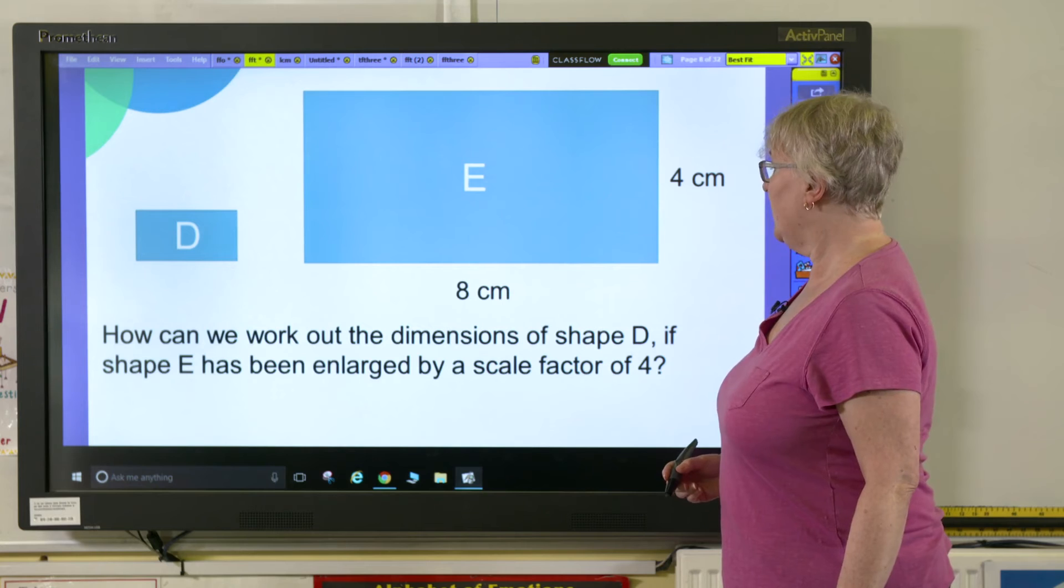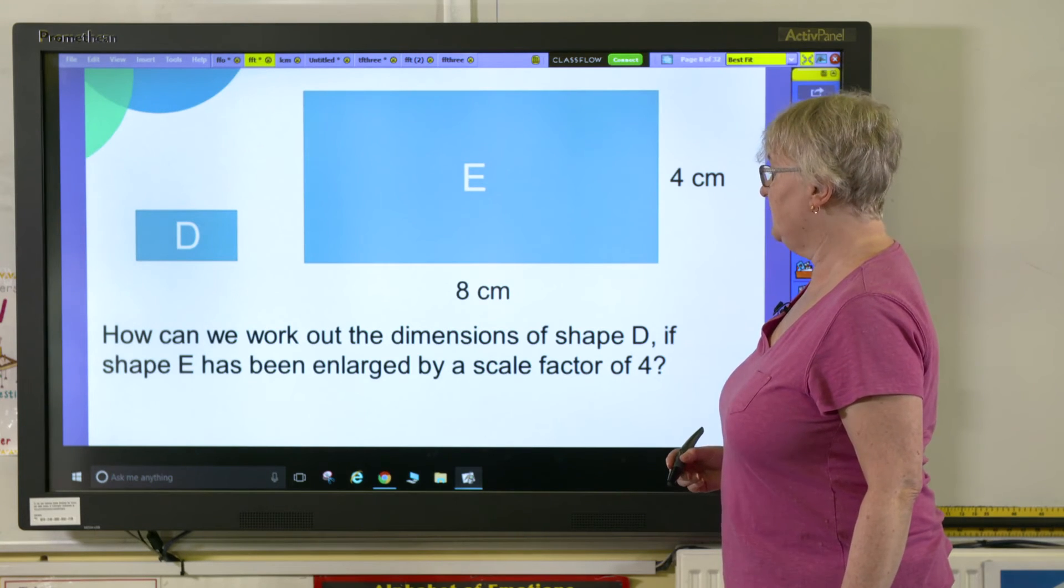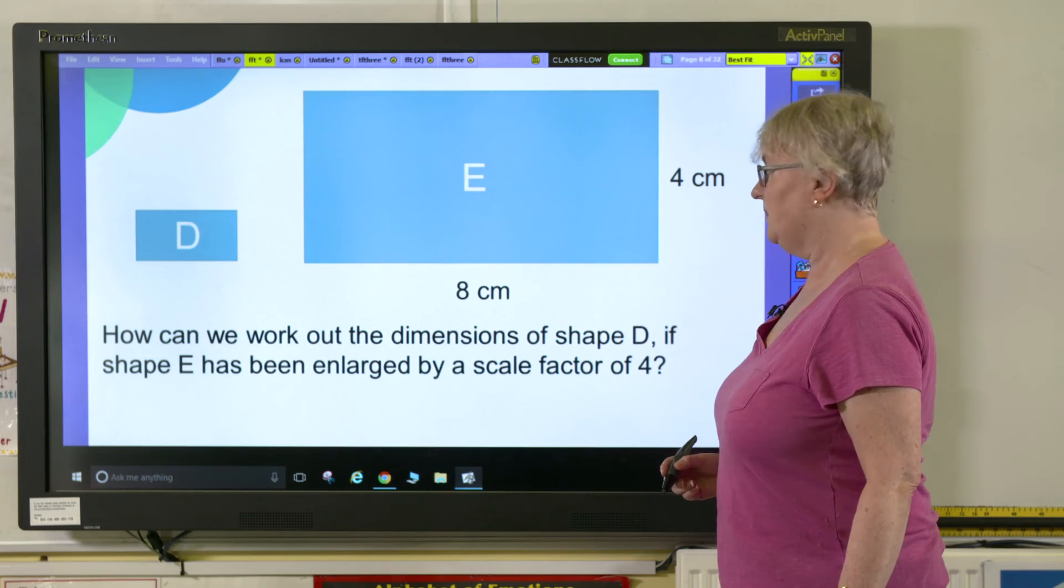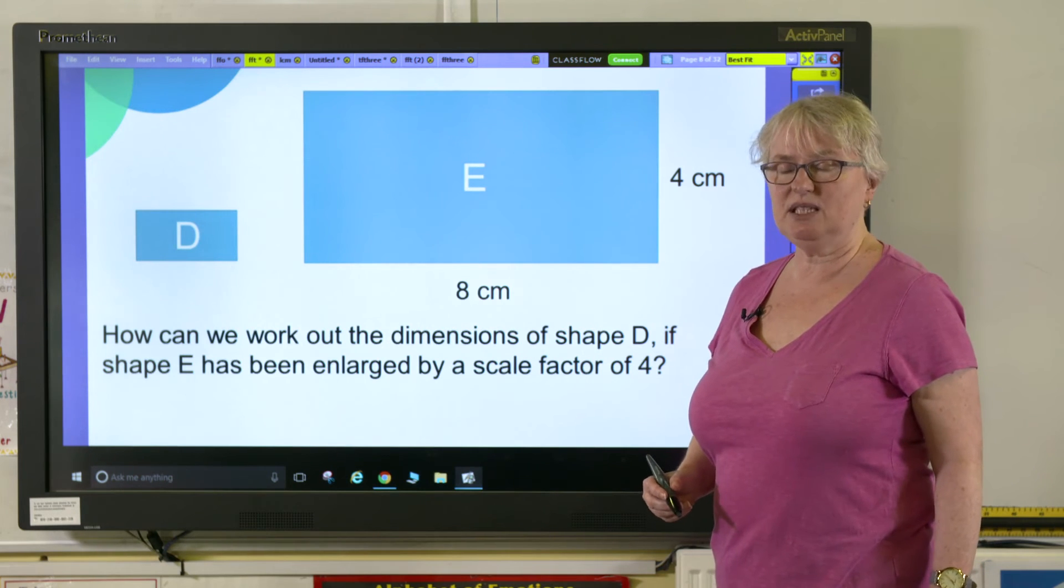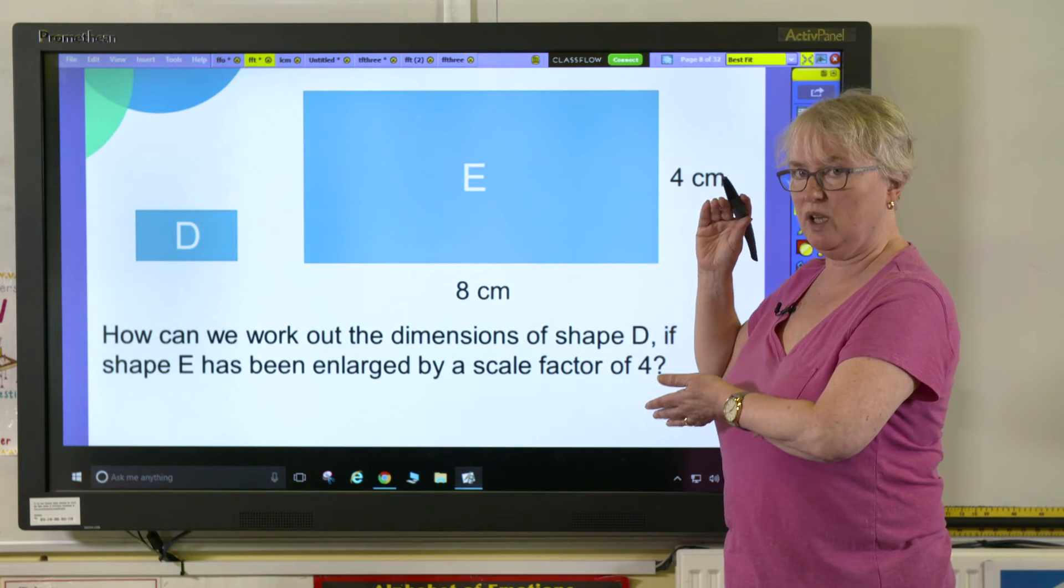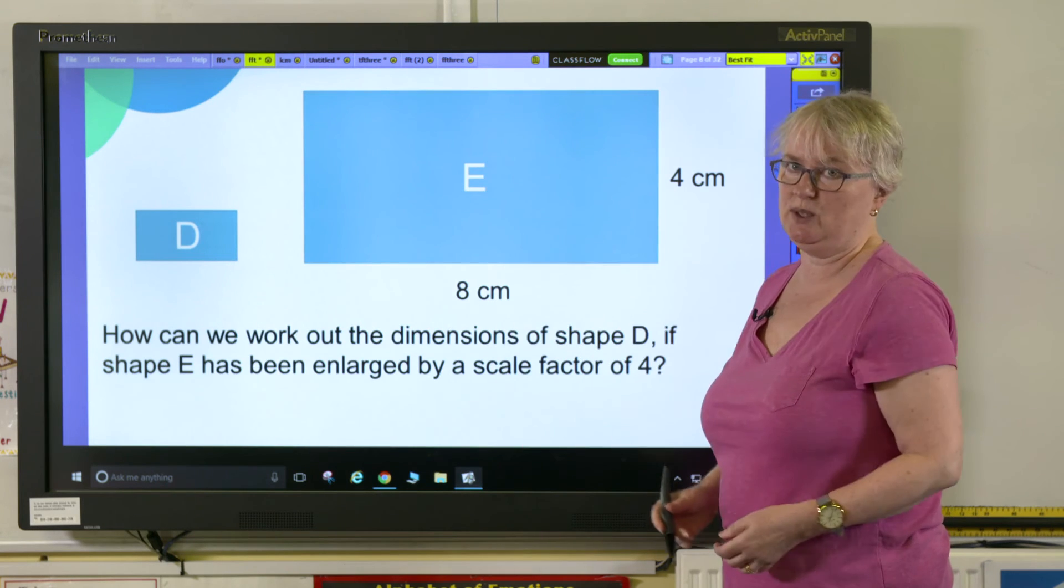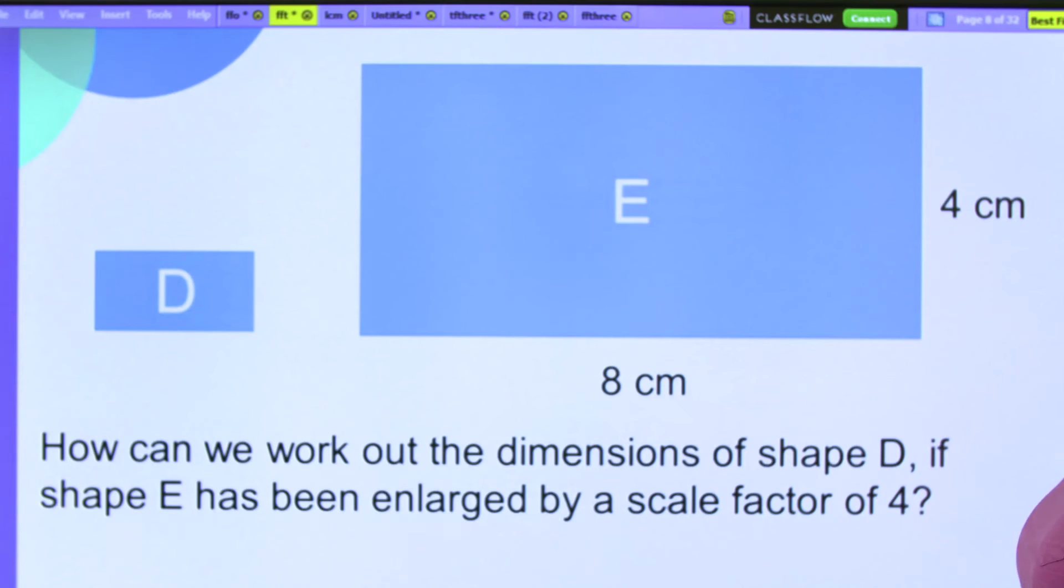How can we work out the dimensions of shape D if shape E has been enlarged by a scale factor of four? So this time, instead of asking the children to start with a small shape and work out what an enlargement would be, we're going to do the opposite and we're going to reduce it. So I want to reduce shape E by a scale factor of four. So I'm going to divide the sides by four.